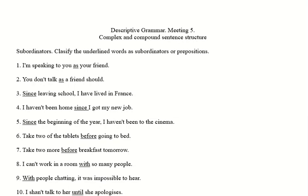Example four: 'I haven't been home since I got my new job.' Here we've clearly got two separate clauses which could be individual sentences — 'I haven't been home' and 'I got my new job' — linked by a subordinator. We've got finite verbs on both sides: normal verbal clauses linked with a subordinator. So here 'since' is working as a subordinator for sure.